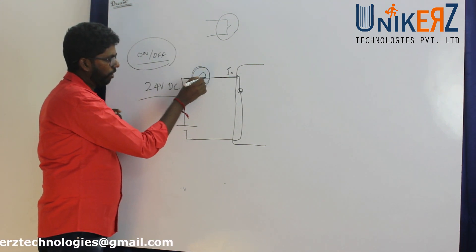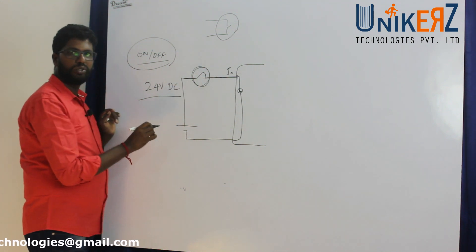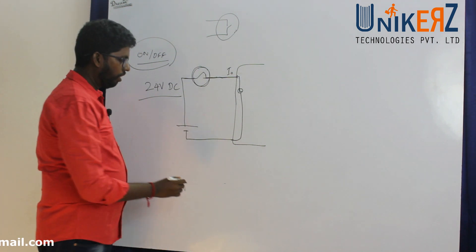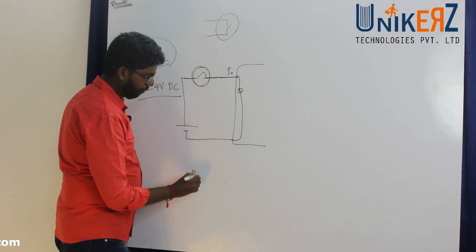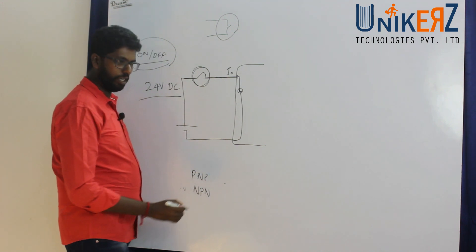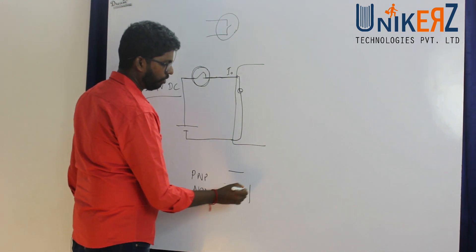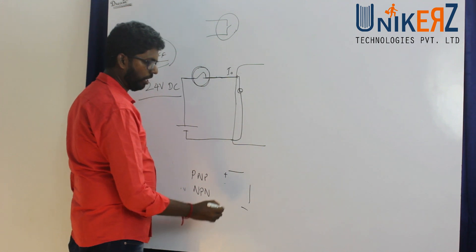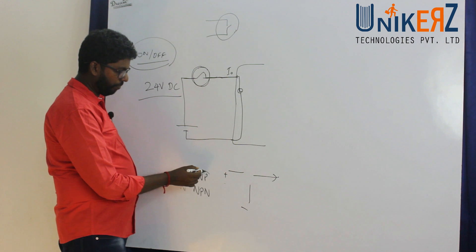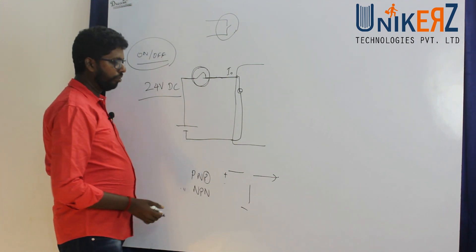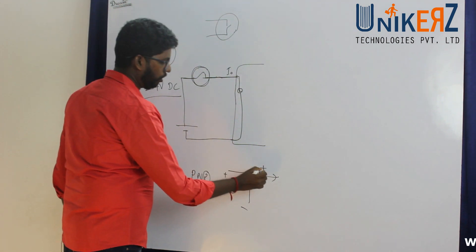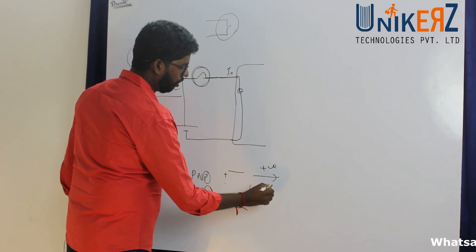If I use a two-wire sensor — called a two-wire sensor — I will give supply to the sensor. The sensor will give one output. PNP means it will give positive output. NPN means it will give negative output — either positive or negative output.